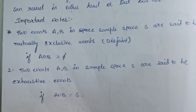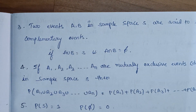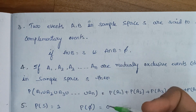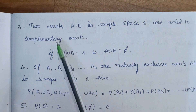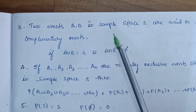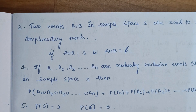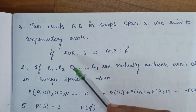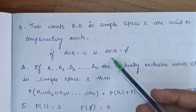Next we check out two events A and B. Two events A and B in a sample space are said to be complementary events. They are complementary events if A union B equals the sample space and A intersection B equals the empty set (null).